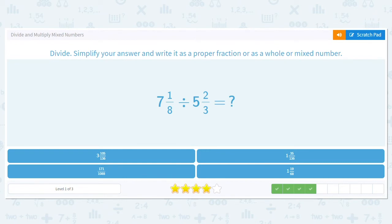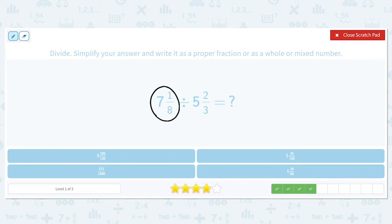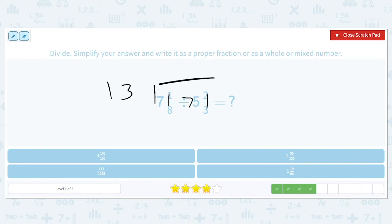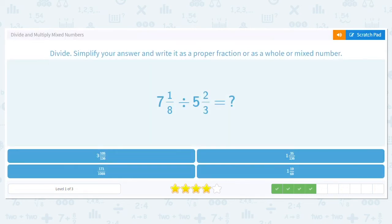Alright, how about this? 7 and 1 eighth divided by 5 and 2 thirds. Okay, so this will be 57 eighths. 5 and 2 thirds will be 17 thirds. So it'll be times 3 over 17. So now we have 171 divided by 136. We do 171 divided by 136, we get 1, we get a 5, we get a 35. So it should be 1 and 35 over 136.